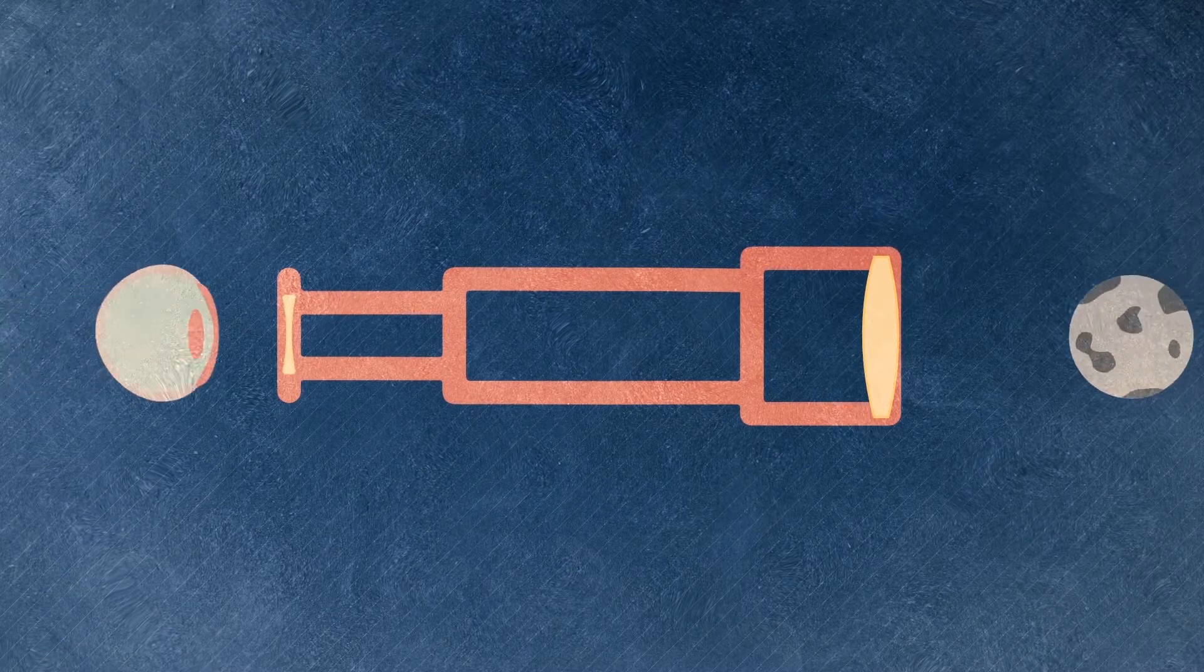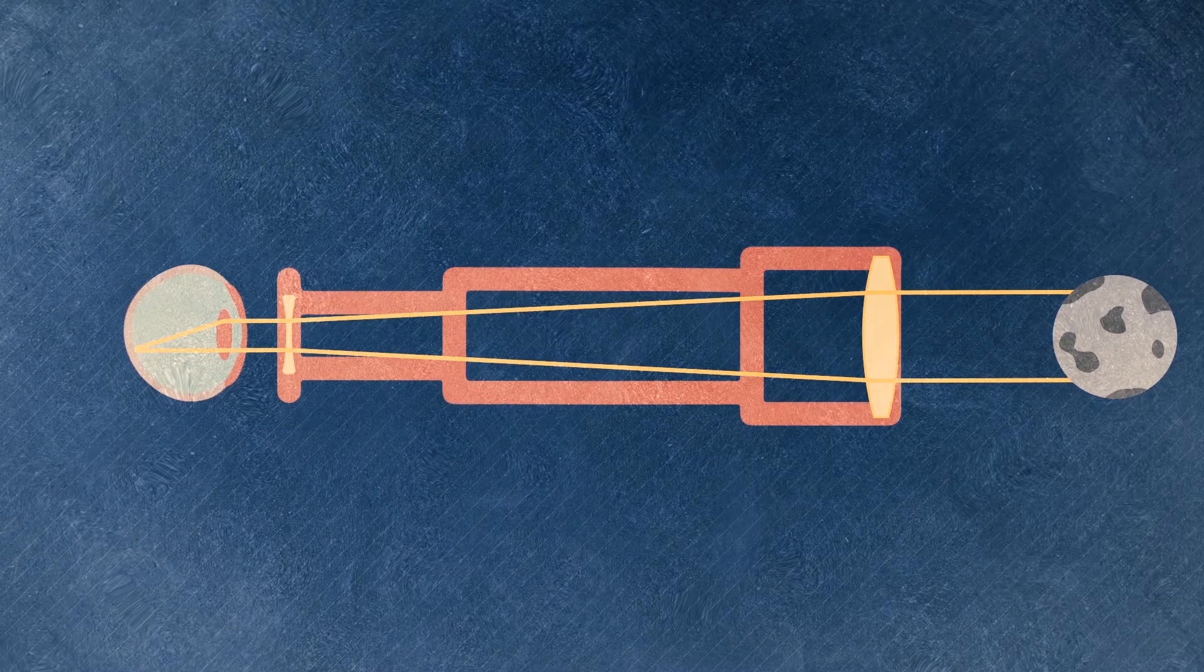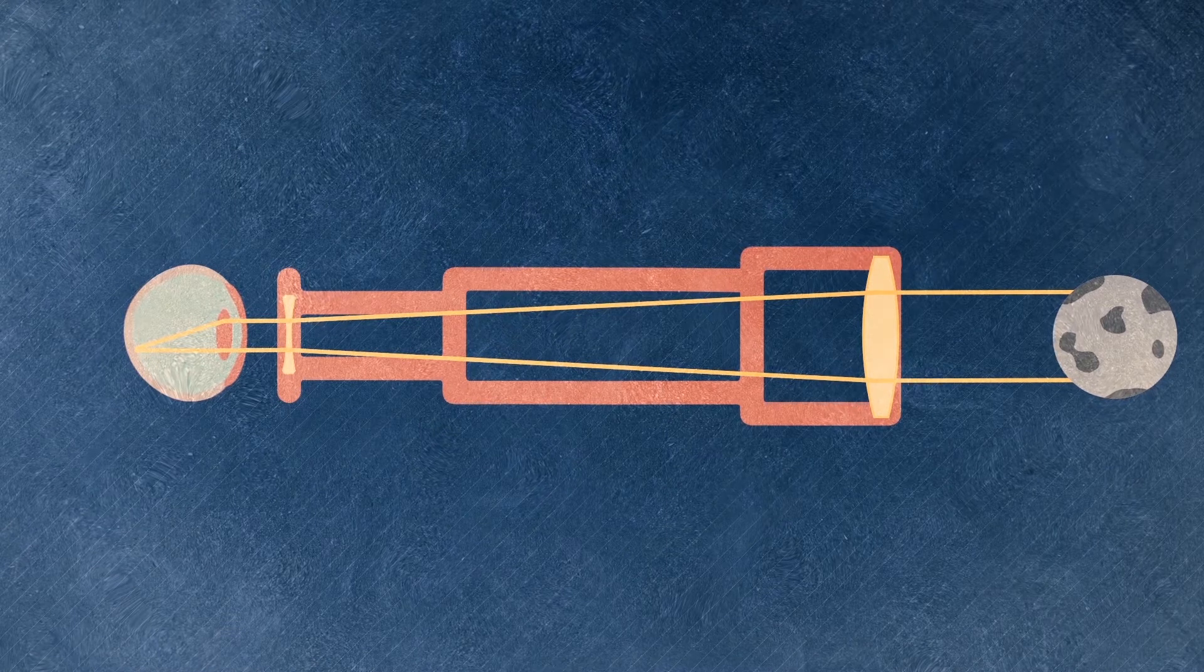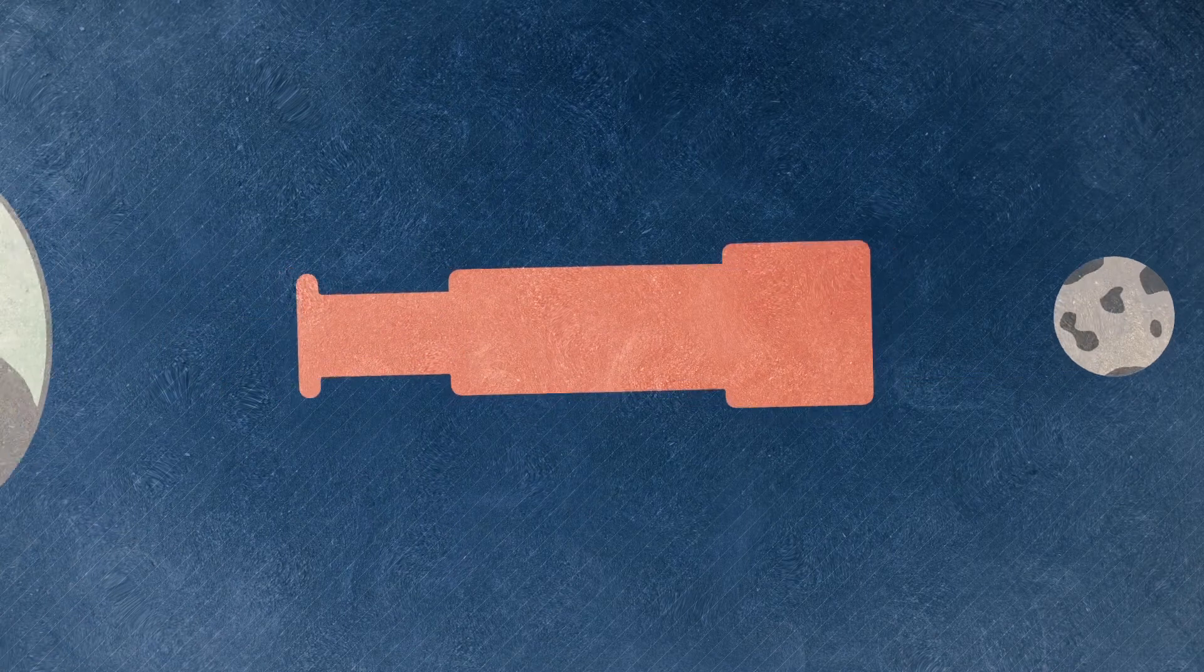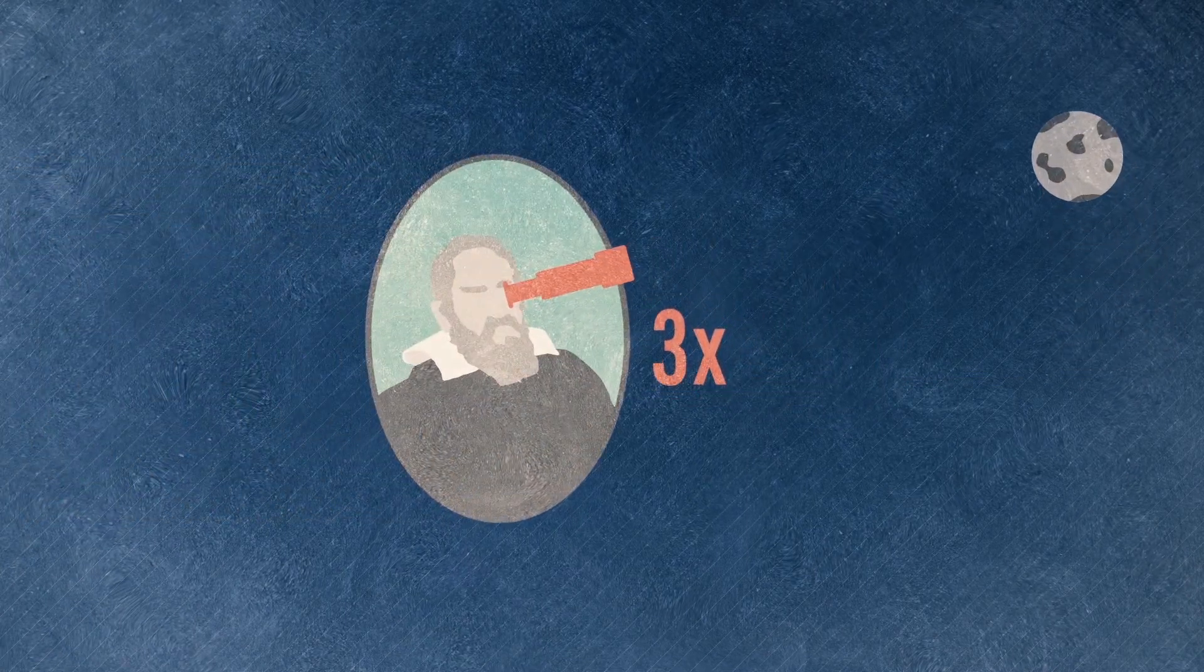The convex lens creates an intermediate image that passes through the concave lens to the eye behind it, where the image is projected onto the retina. Galileo's first telescope achieved a magnification of just three times that of the naked eye.